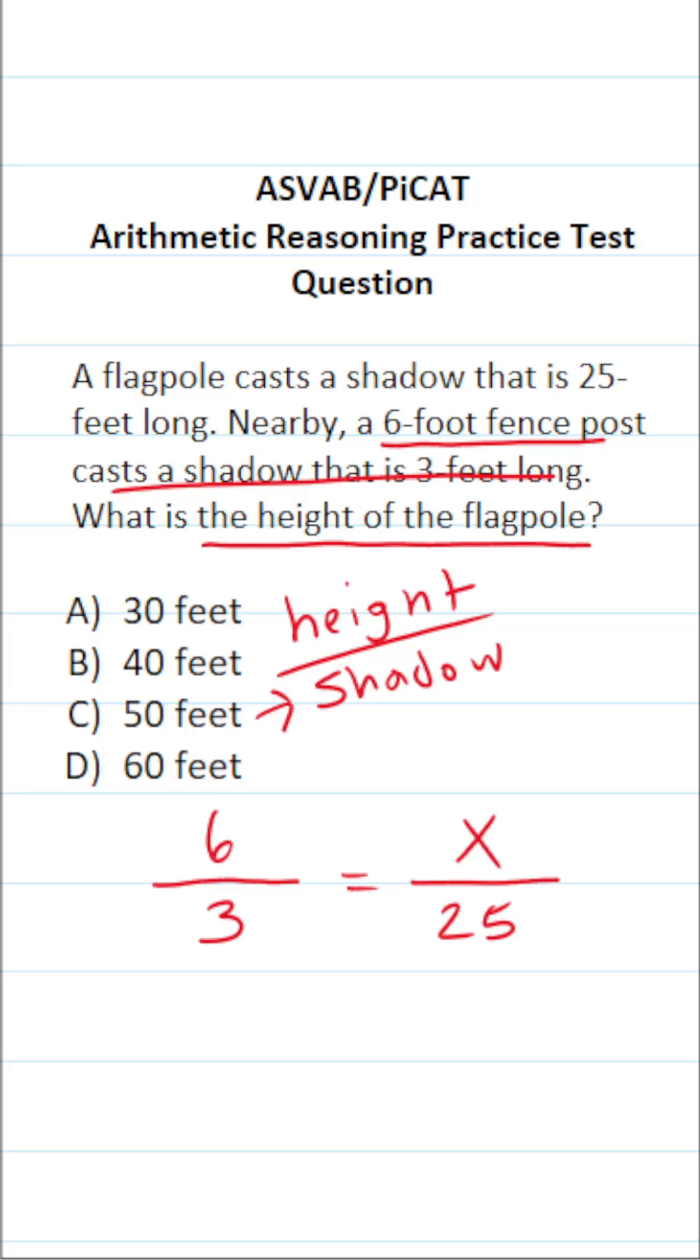We could read this as: the height of the fence post over the length of its shadow is equal to or proportional to the height of the flagpole over the length of its shadow.